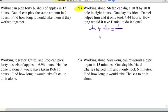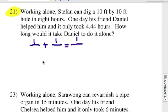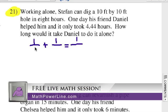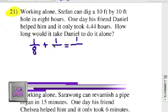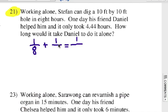Number 21. Working alone, Stefan can dig a 10 foot by 10 foot hole in 8 hours. One day his friend Daniel helped him and it only took 4.44 hours. How long would it take Daniel to do it alone? Alright, so this first fraction, let's represent the amount of work Stefan can do and that is 1 over 8. He can do it by himself in 8 hours. This fraction here will be how long Daniel can do it by himself and we are being asked that. That's our unknown and we'll call it X. Now you can call that a D or whatever variable you want, it doesn't really matter. Now together, how long can they do it? 4.44.